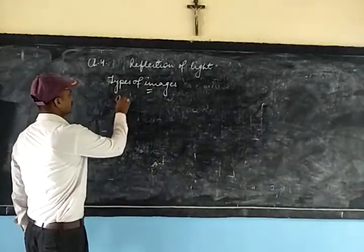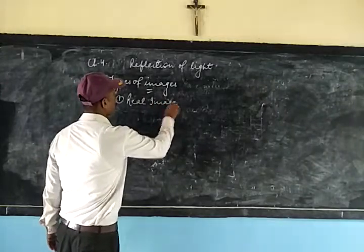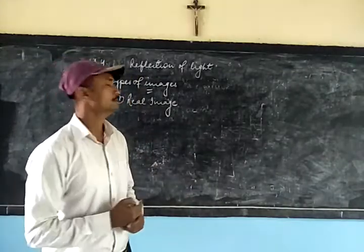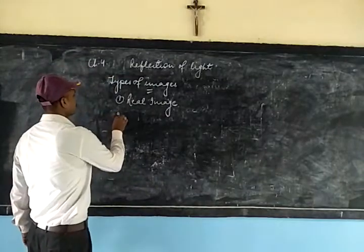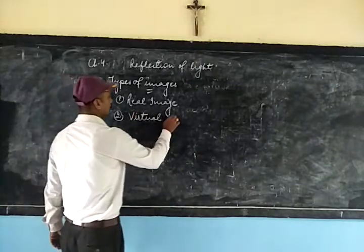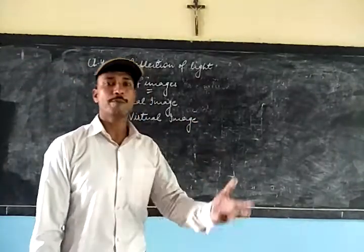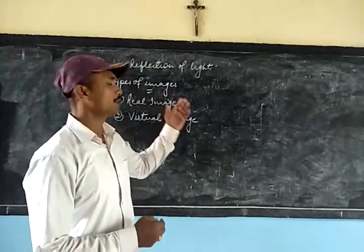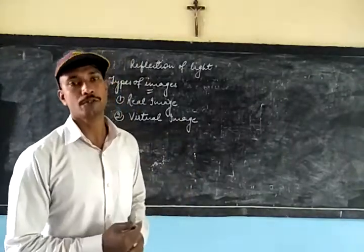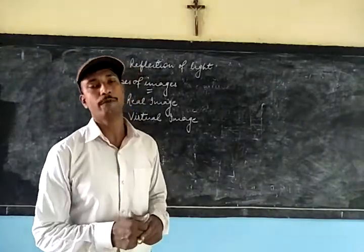The first type of image is a real image. A real image is the image that is obtained on the screen. Real image can be found due to the actual intersection of reflected rays.